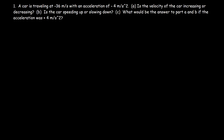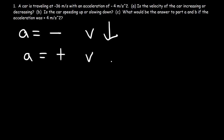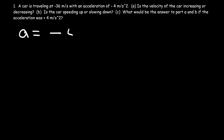Is the velocity of the car increasing or decreasing? We can find the answer just by looking at the sign of the acceleration. If the acceleration is negative, that means that velocity is decreasing. If the acceleration is positive, the velocity is increasing. So in this case, the acceleration is negative 4 meters per second squared, meaning the velocity is decreasing 4 meters per second every second. So the velocity of the car is decreasing.